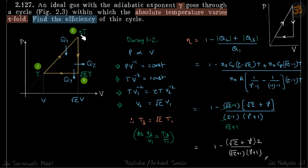We've written the temperature here but we don't know it yet. We only know that this temperature is T and this is τT. Heat is gained here and lost in these two processes, so our efficiency is 1 minus (Q2 + Q3)/Q1.